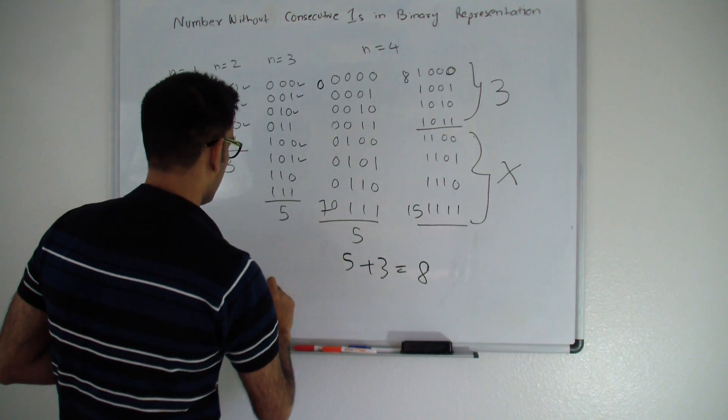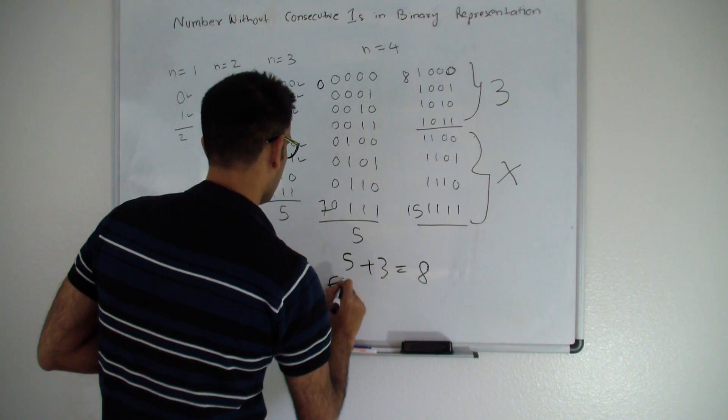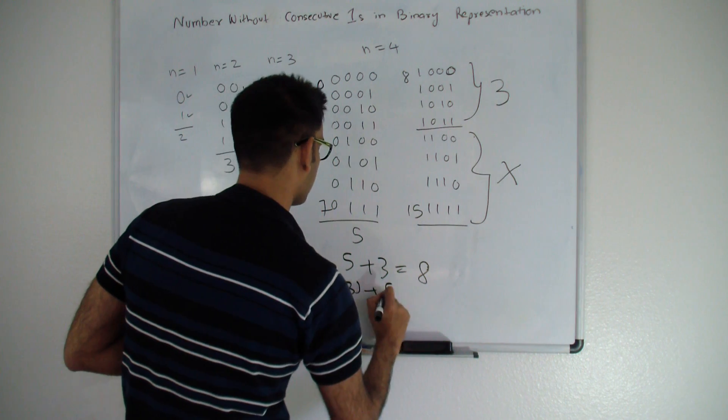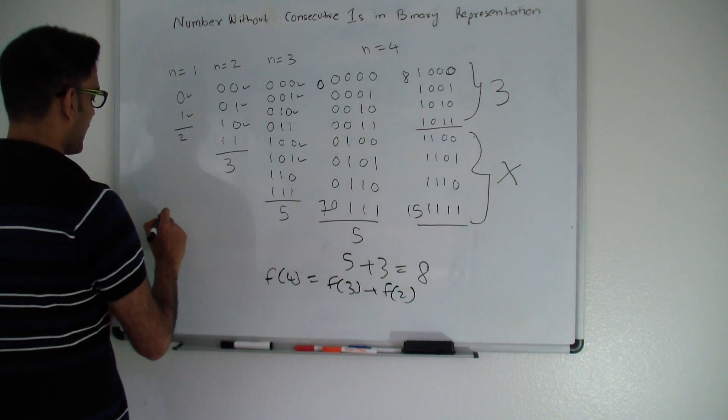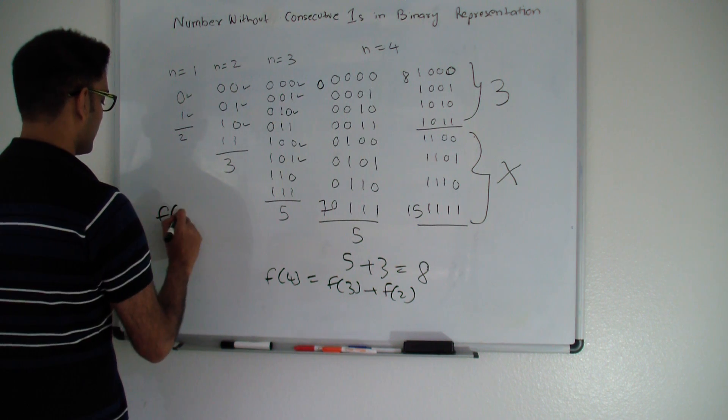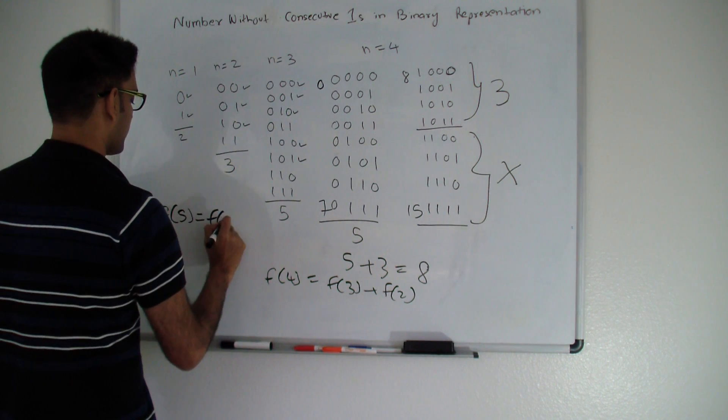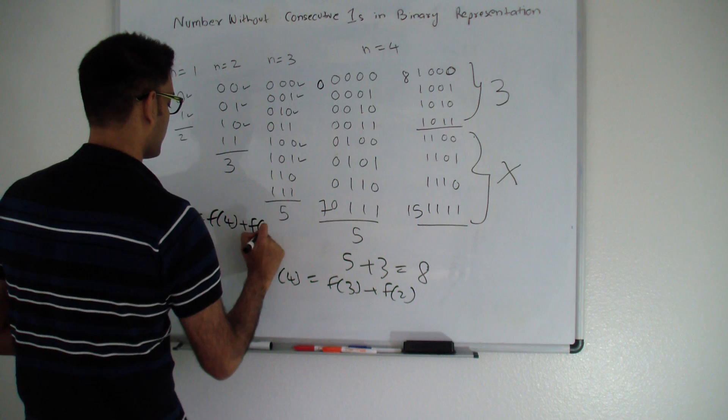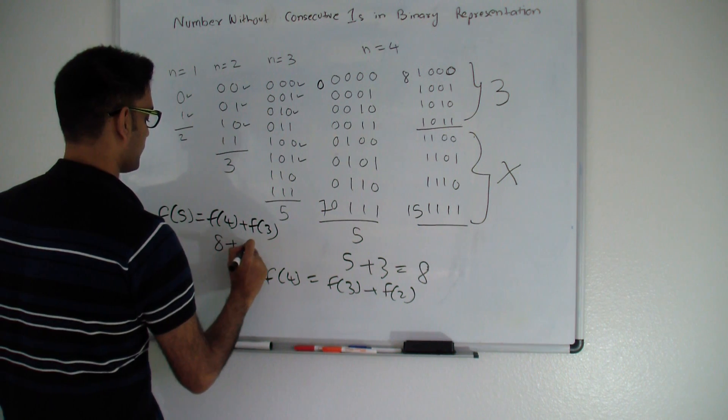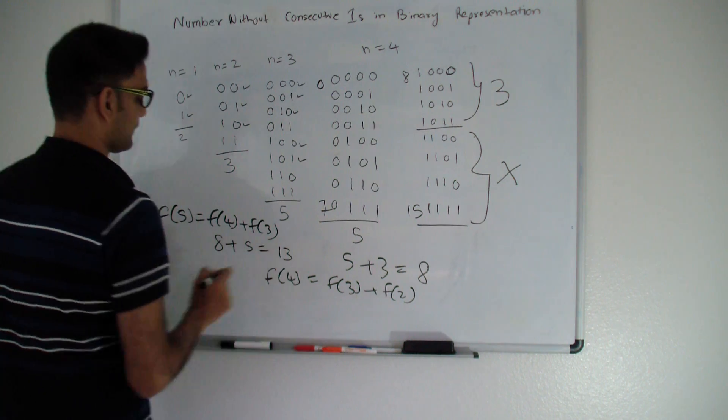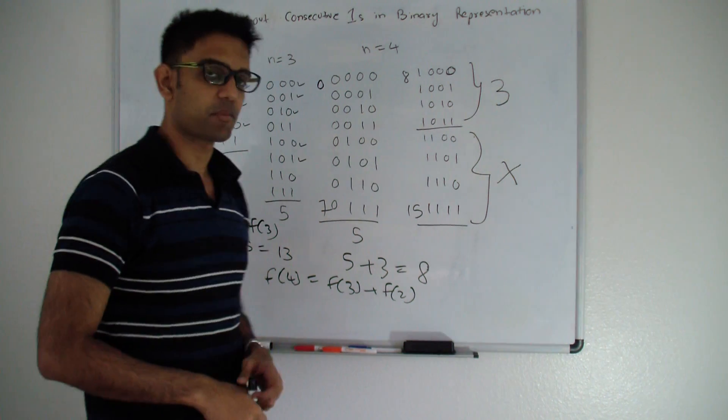Notice how f of 4 was equal to f of 3 plus f of 2. If I was calculating 5, n equals 5, all I have to do is sum up f of 4 plus f of 3. So this is 8 plus 5, so 13. So this is how it's a Fibonacci series.